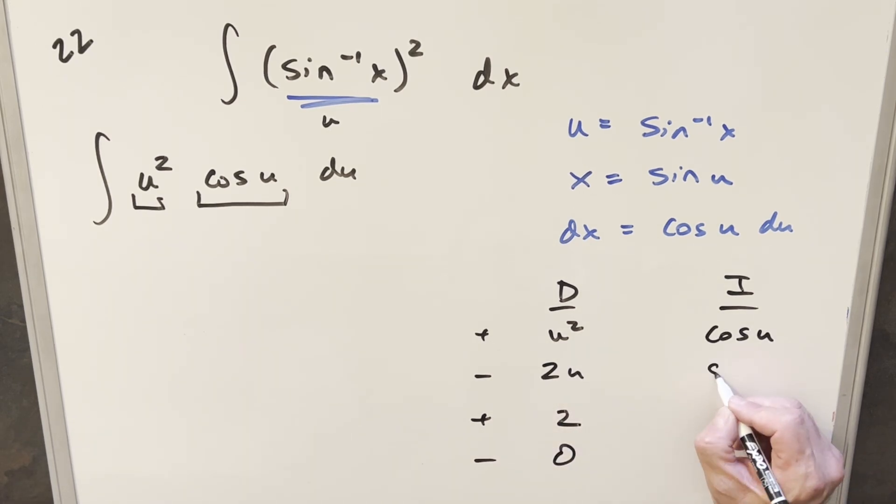Integral here of cosine, that's just going to be sine of u. Another integral, minus cosine u. And then for the last one, we're going to have minus sine of u. So in the last row here is a zero.